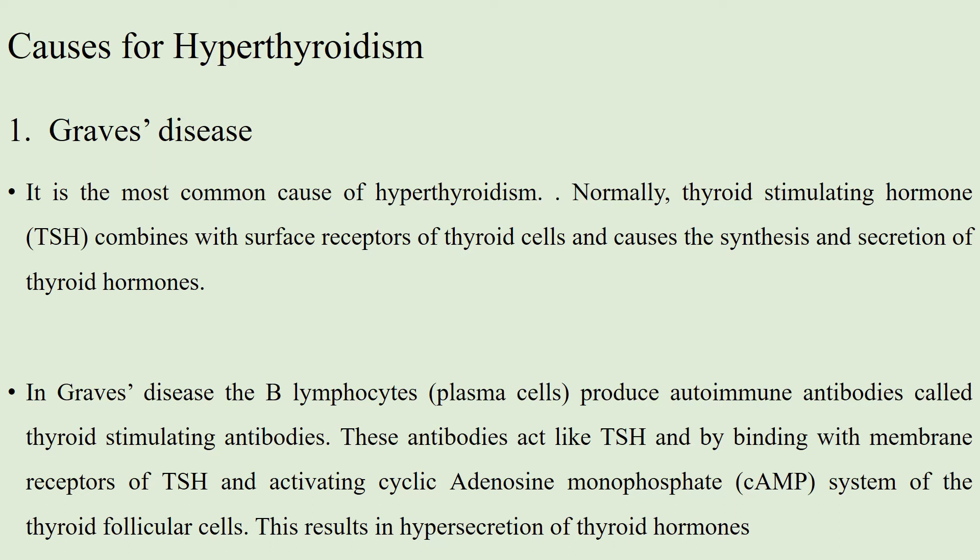The antibodies act for a long time, even up to 12 hours, in contrast to thyroid stimulating hormone which lasts only for an hour or so. The high concentration of thyroid hormone caused by the antibodies suppresses the thyroid stimulating hormone production. So the concentration of thyroid stimulating hormone is low or almost zero in the plasma of most hyperthyroid patients. Thyroid hormones affect many body systems, so signs and symptoms of Graves disease can be wide ranging. Although Graves disease may affect anyone, it is more common among women and in people younger than 40.